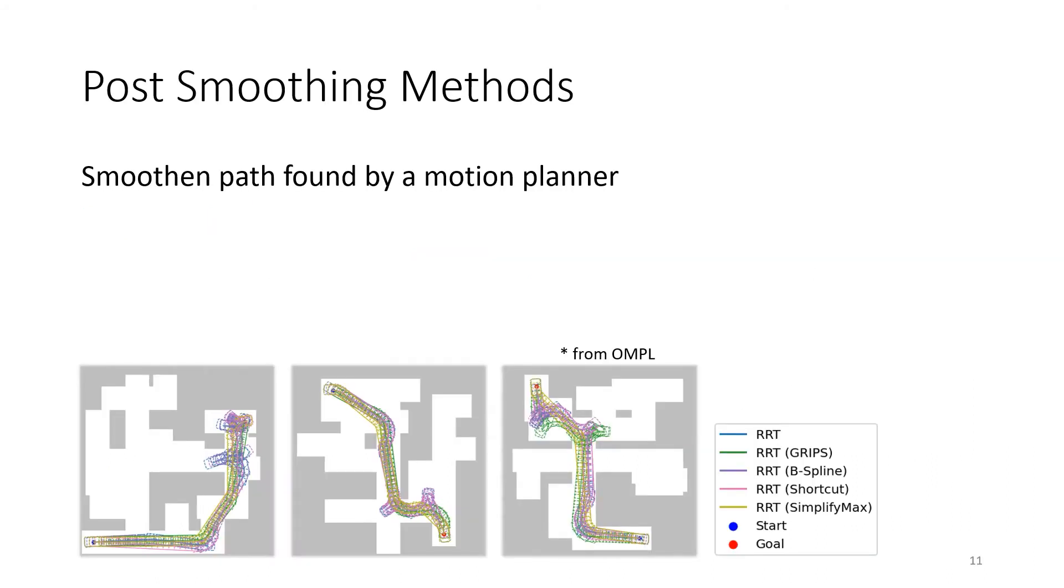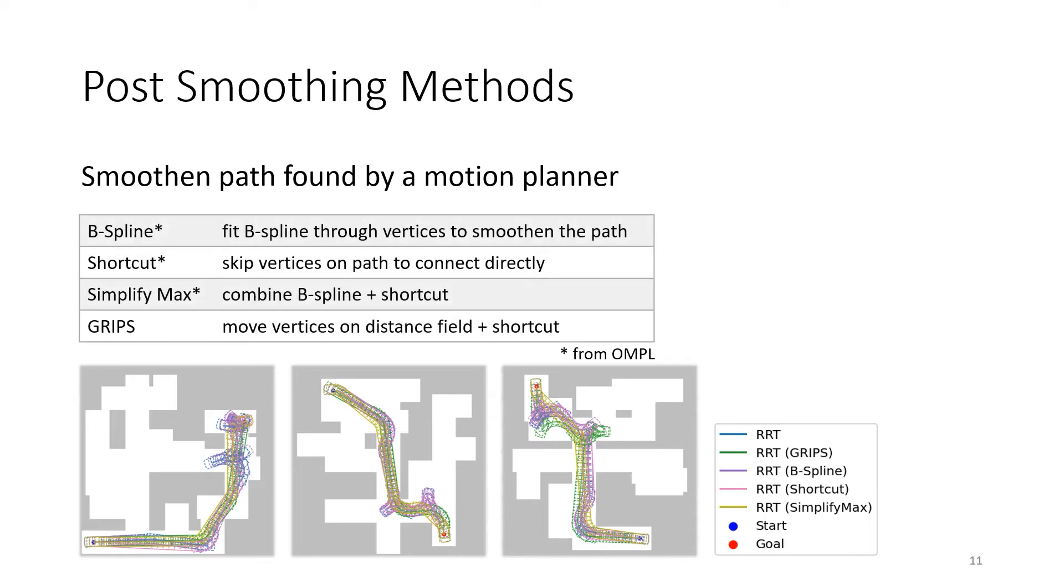Post-smoothing methods improve the path found by the motion planners. We provide interfaces to the following algorithms from OMPL: B-spline, which fits a spline through the vertices to smoothen the path.